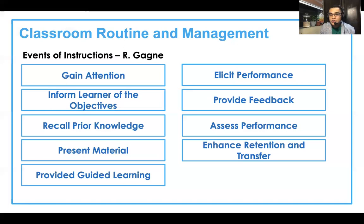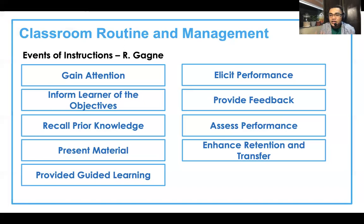Next is provide guided learning. This may vary depending on the approach or strategy of the teacher. You may start with a probing question or with an activity. Then elicit performance — allow the learners to perform something from which you can derive information, or vice versa: you teach and then allow the learners to conduct a performance. You may also provide feedback.